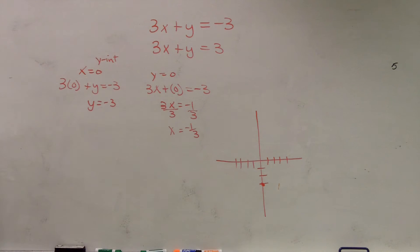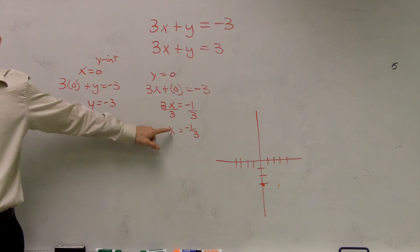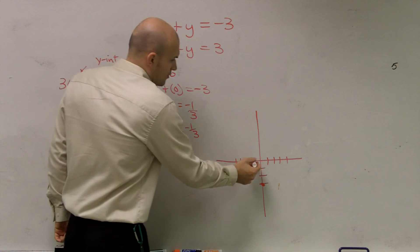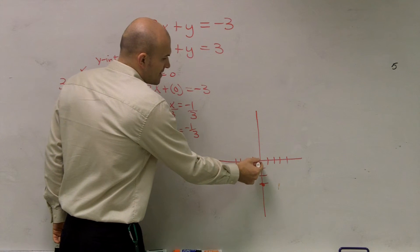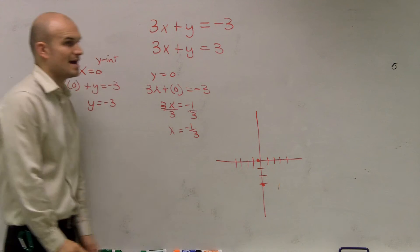And now what I notice is the x-intercept is at negative 1 third. So I go over. Well, it's not all the way over 1, but it's going to be at negative 1 third. So it's going to look something like that.